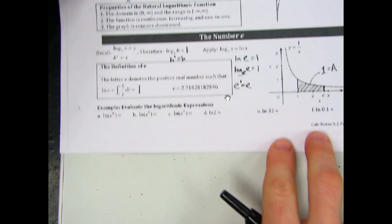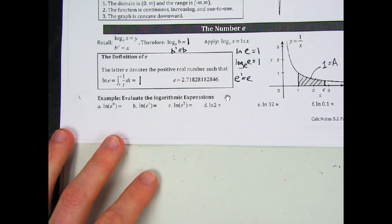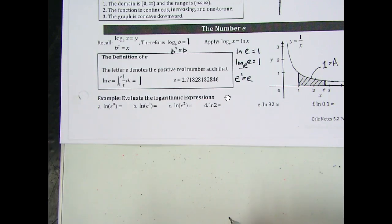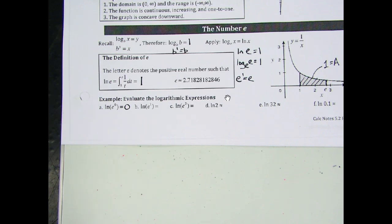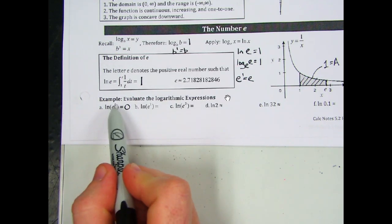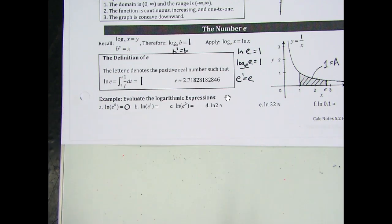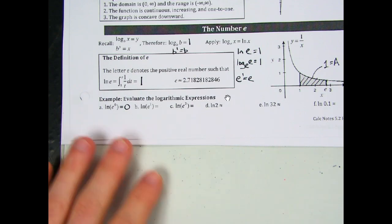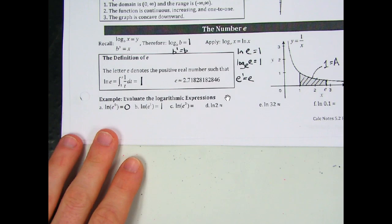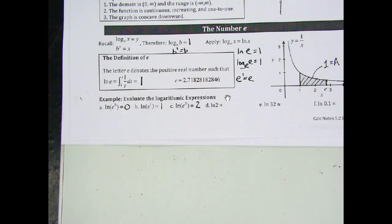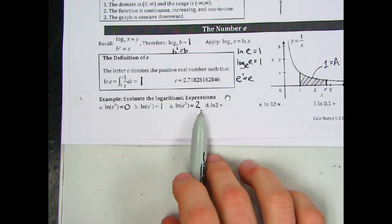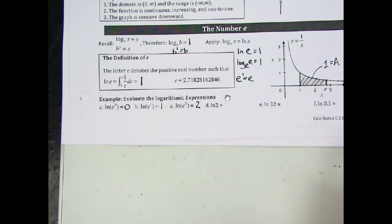Quick examples: natural log of e to the 0 — anything to the zero power is 1, and natural log of 1 is 0. Or think of it as moving the exponent to the front: 0 times anything is 0. Natural log of e to the first is 1. Natural log of e to the second is 2, and so on. For anything that isn't a simple power of e, it becomes more difficult.